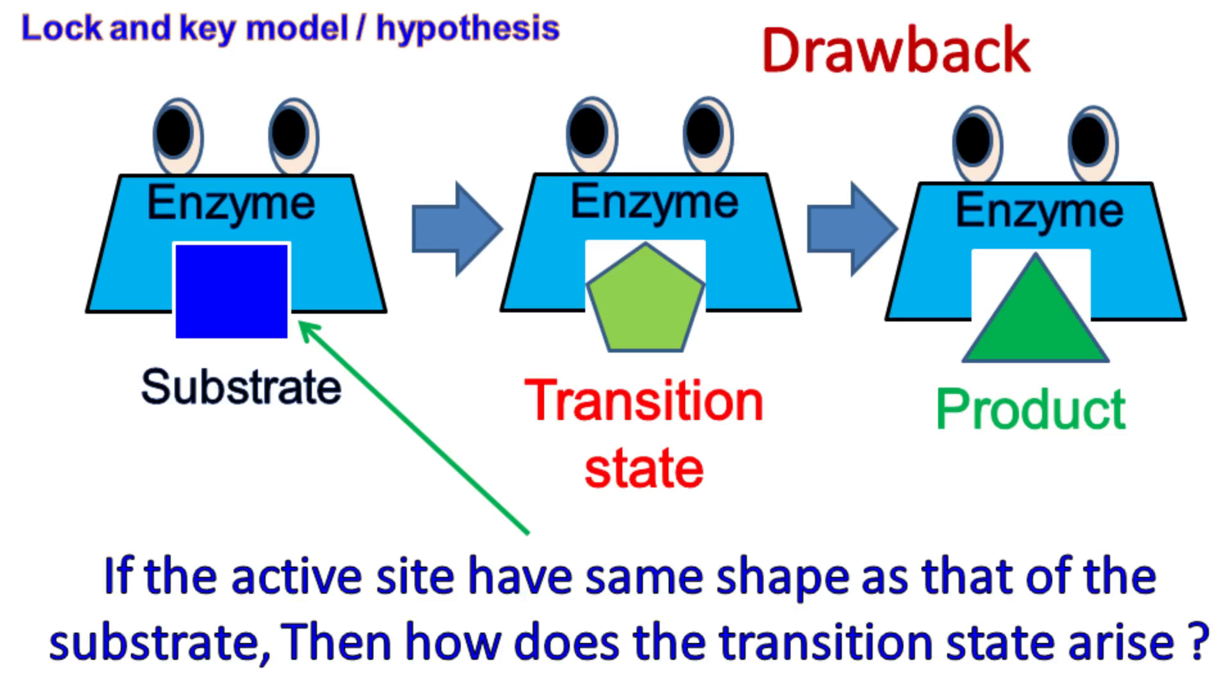To get this story short, the lock and key model remained popular for several decades after its proposal. However, in the 1930s, when the transition state was discovered, the lock and key model failed to explain the transition state of the substrate.